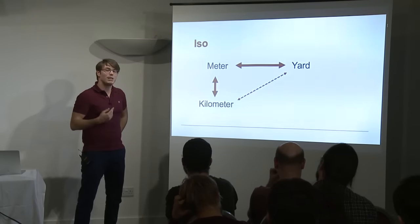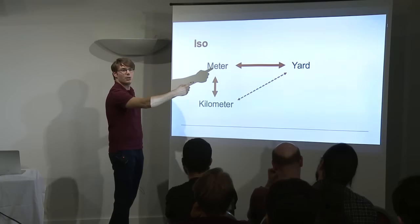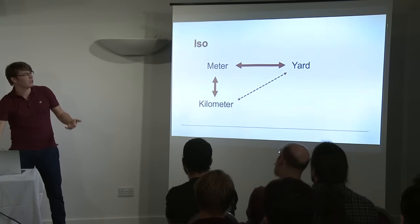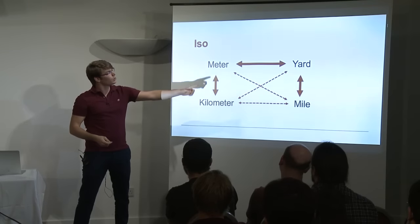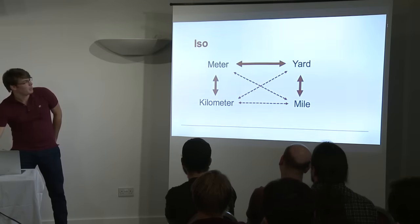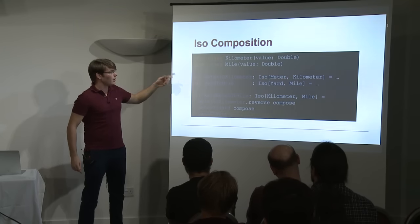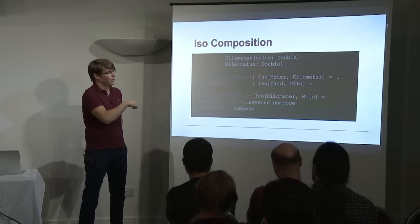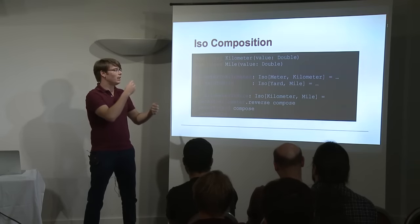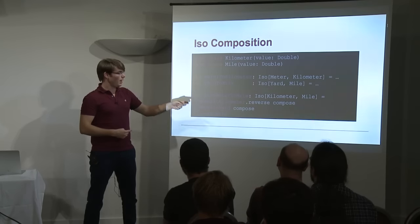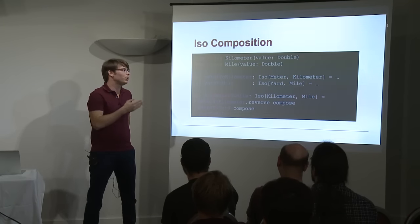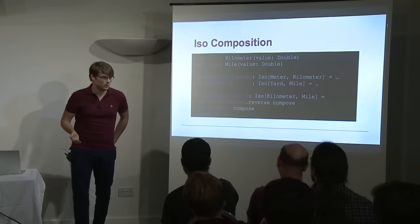We can implement it relatively easily, and what we get for free is an ISO between Kilometers and Yards — we just compose kilometer_to_meter and meter_to_yard ISOs. The more units we add, the better it becomes. If we now add an ISO between Yard and Miles, we get all the other conversions for free. So we define case classes Kilometer and Mile, plus the ISOs. For kilometer_to_mile, we reverse meter_to_kilometer to get kilometer_to_meter, compose with meter_to_yard, then compose with yard_to_mile — and we get an ISO between Kilometer and Mile.